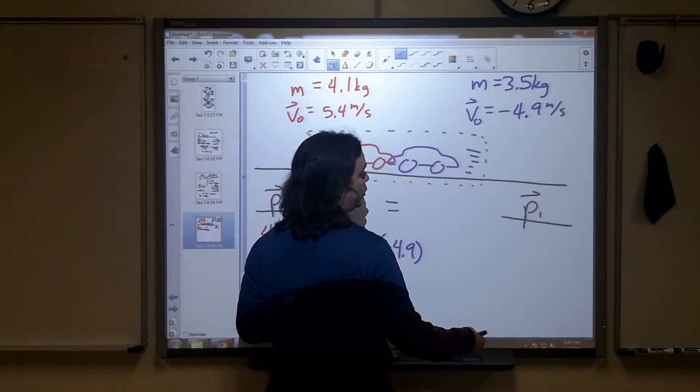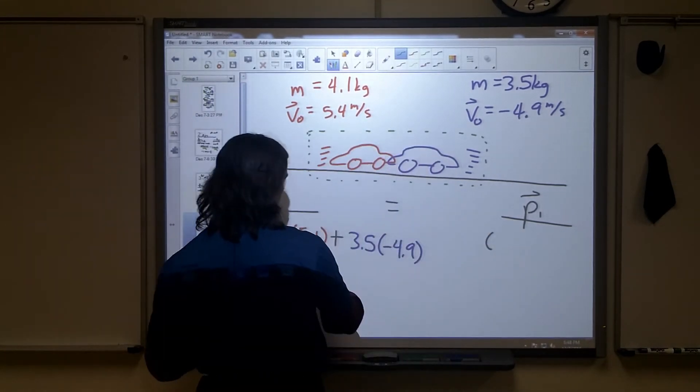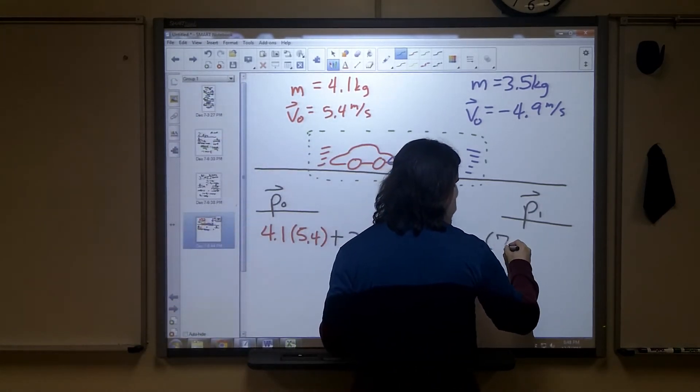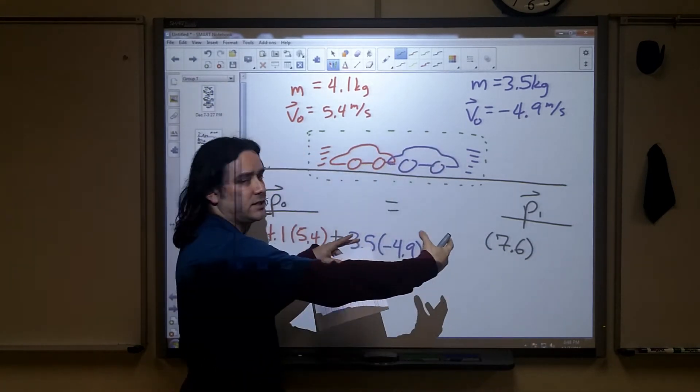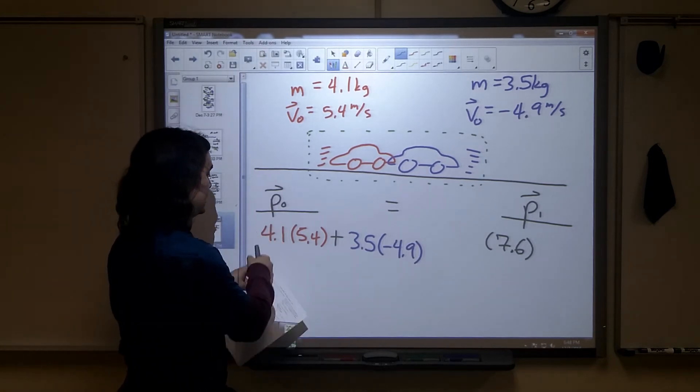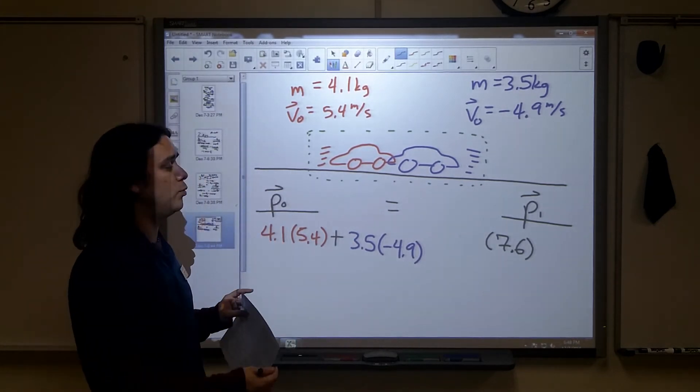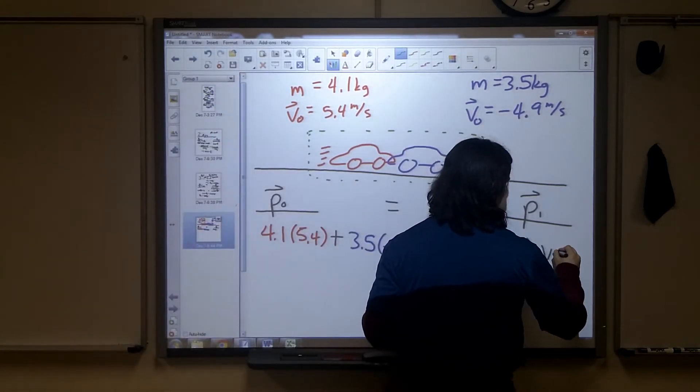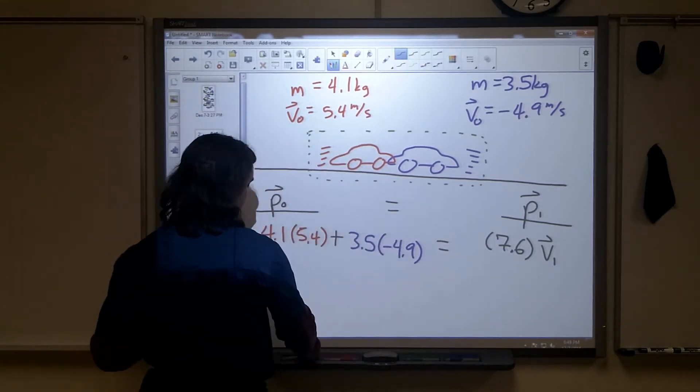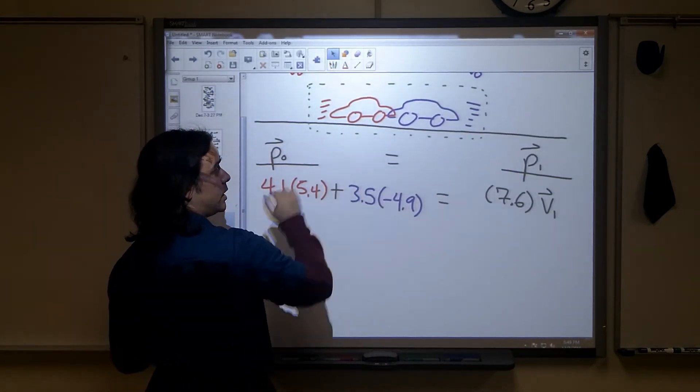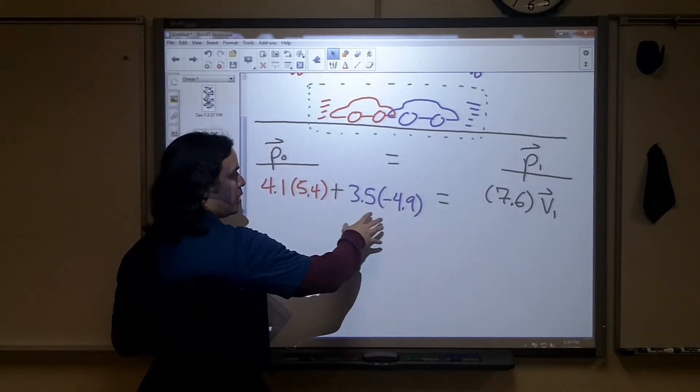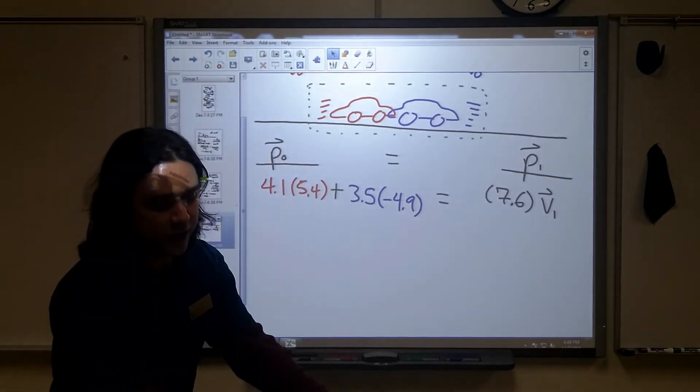Over on the end, we know that they stick together. So we're actually going to end up with 4.1 plus 3.5. That'll be 7.6 kilograms will be the mass of the combined cars. That's what we've been looking at in class. You can still treat it as the mass of 4.1 and the mass of 3.5, but they will both have the same final velocity because they are stuck together. And if there are no significant external forces, which the way we've set things up, our system does not have any, then the momentum will be conserved. So I can go through. I want to find my final velocity, so I need to solve for it.